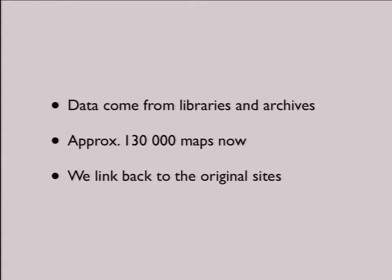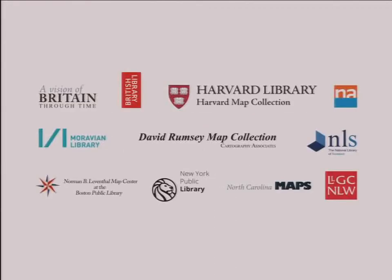Data in this collection come from libraries and archives from around the world. There are around 130,000 maps right now, but we are growing. And as I said, it's a search engine — we don't steal the data, we don't get it for ourselves, we just link to the original sites. We basically provide a service to those institutions. There's a list of the institutions that are currently in the system.